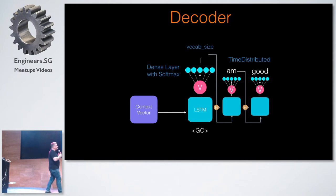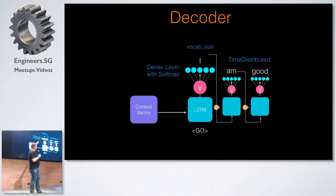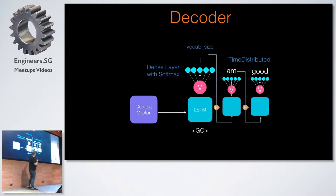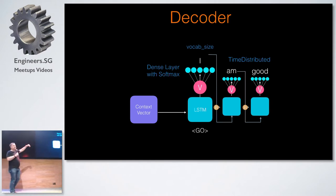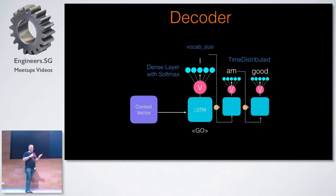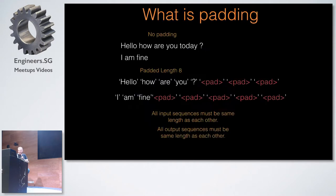Once it makes a prediction — here we've got a GO token being passed in — we feed that as the input on the next cell to make the next prediction, and so on. In theory, if you get it all right, it should feed out whatever you're trying to translate or whatever the answer for a chatbot is. This is one of the ways you can actually work with generative chatbots too.